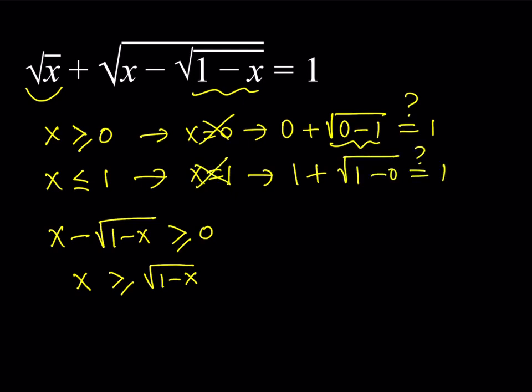Why did I check these? Because we have two inequalities that are not strict, but apparently they need to be strict because 0 and 1 will not satisfy. So that tells me that x needs to be greater than 0 and less than 1. Therefore, we can safely say that x needs to be between 0 and 1. When I find my solutions, I'll make sure they satisfy this inequality.